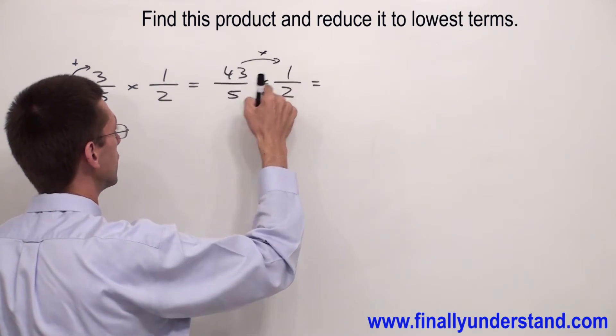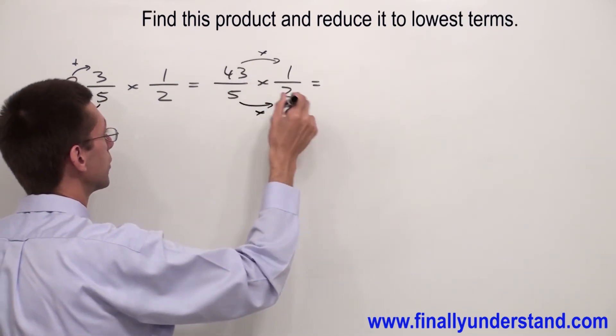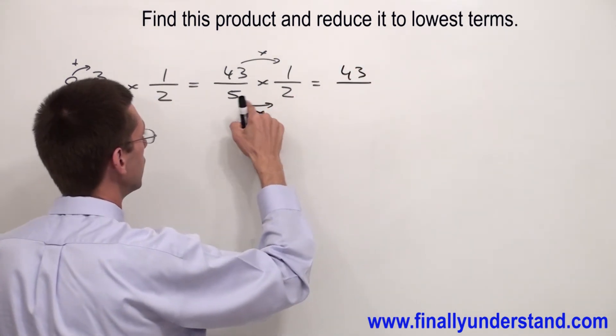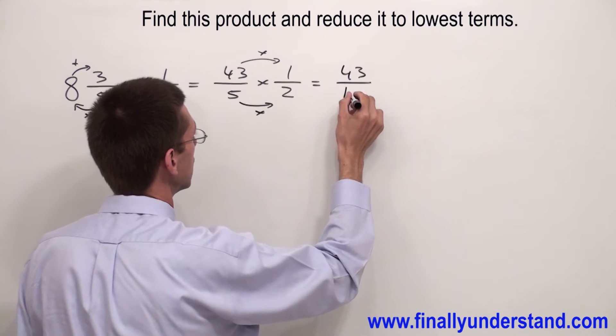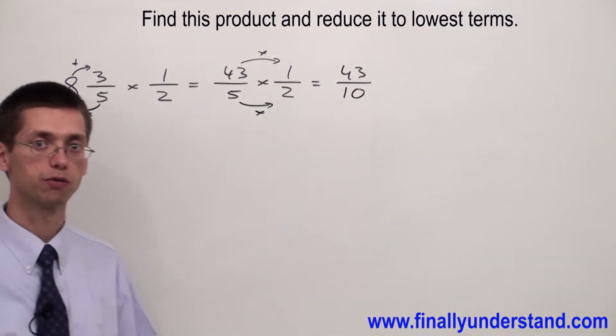Simply multiply numerator by numerator and denominator by denominator. 43 times 1 is just 43. 5 times 2 is 10. 43 over 10, this is an example of an improper fraction.